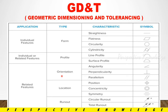Next is orientation, location, and runout — these are related features. For orientation, we have angularity, perpendicularity, and parallelism. Angularity is measured as a reference angle. Perpendicularity means a profile is perpendicular to a base feature — you can see it at 90 degrees. Parallelism means the profile is parallel to a reference.